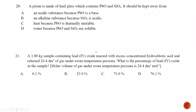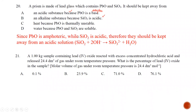Question number twenty: a prism made of black glass contains PbO and SiO2 — it should be kept away from what? An acidic substance? PbO is a base, so it should be kept from acids — but also alkaline solutions because SiO2 is acidic and PbO is amphoteric. Actually, both PbO and SiO2 can react with alkaline solutions, which is correct. Heat? PbO2 is thermally unstable, but PbO is thermally stable. Water? Both PbO and SiO2 are insoluble in water. The best answer is B.